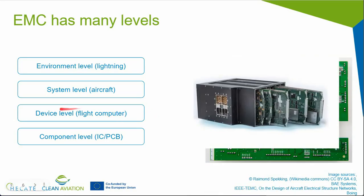The next level we can distinguish is device level. At device level, the PCBs themselves become the black boxes, and the focus is on the interaction between them — how much current can couple through the structure, or what maximum fields can appear at one PCB when something is happening at another. We are also interested in modeling how much energy couples into the ports of the system, but we won't model the PCBs in full detail; they may be simplified by modeling them as perfect electric conductors.